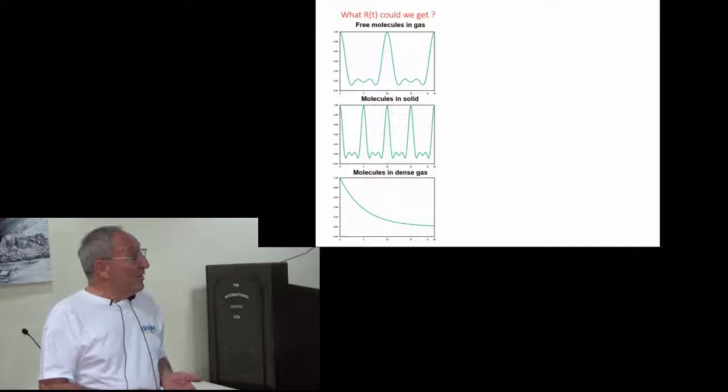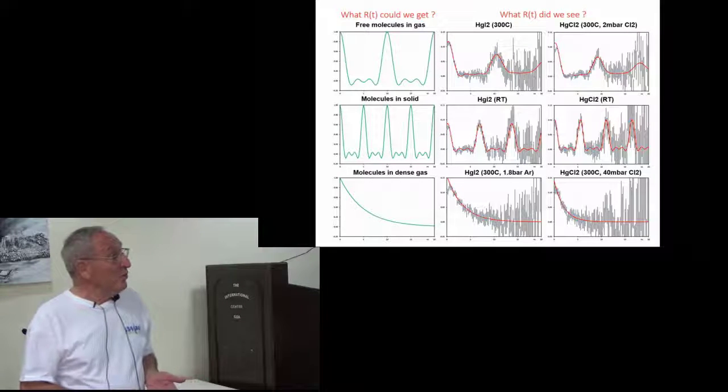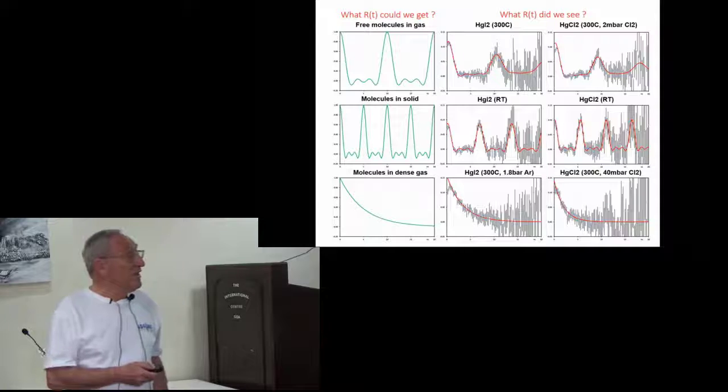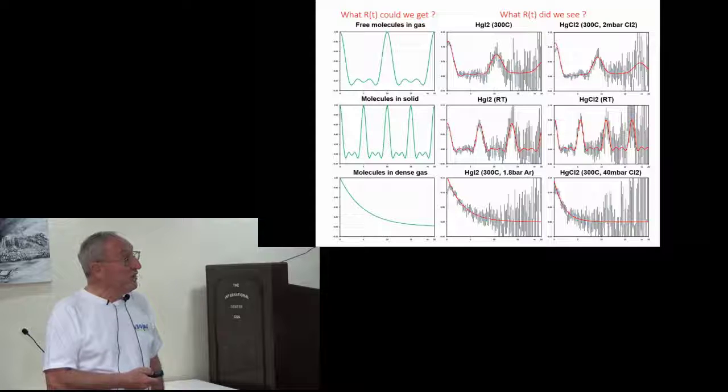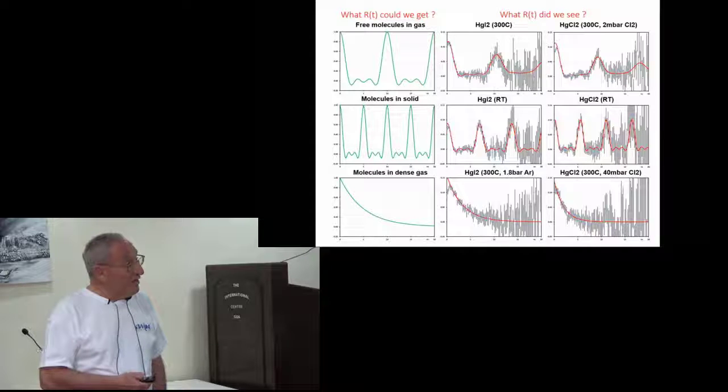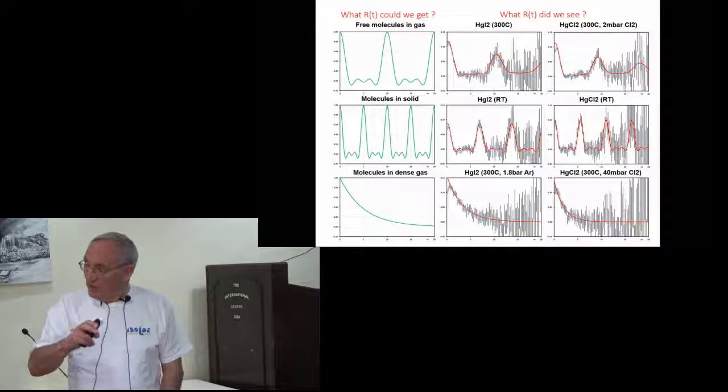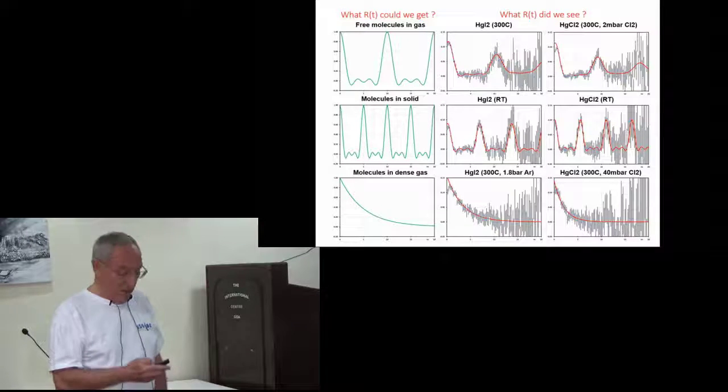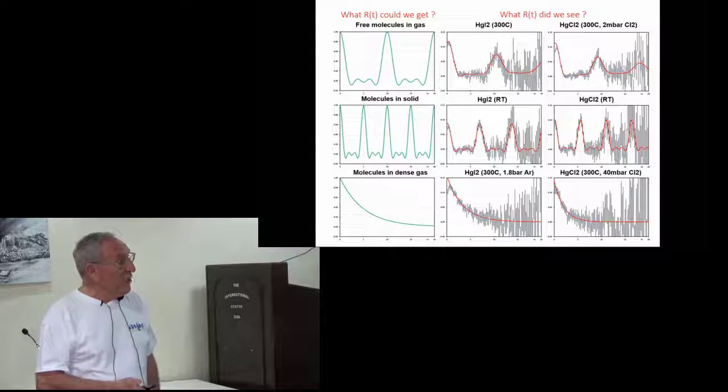So what we see for the mercury cases - we happened to measure two of them, the iodide and the chloride - and we have then measured the interaction in the free molecule. In both cases we simultaneously measured in the corresponding solids sitting on the wall of the container.